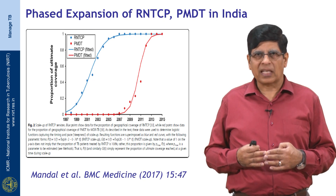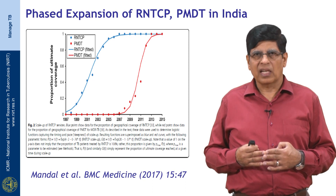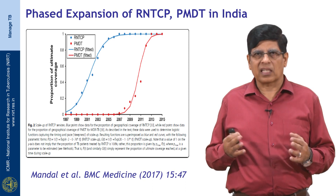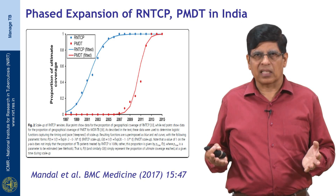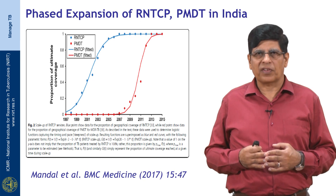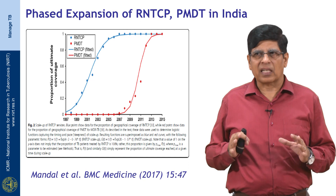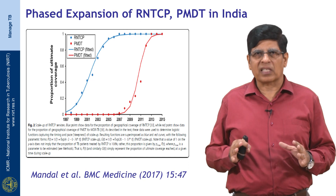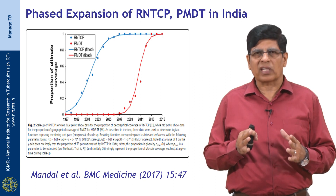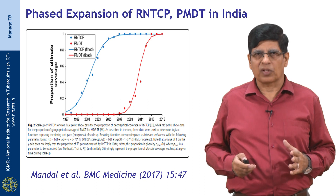Programmatic management of drug-resistant TB was initiated in 2007 and attained 100% geographic coverage by 2015. It is important to keep in mind that 100% geographic coverage does not mean RNTCP was able to detect 100% of cases in the community.